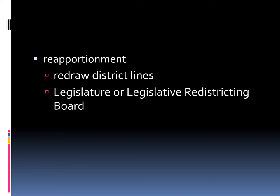Let's talk about reapportionment. That means we take the population counts from the census and figure out how they're going to be calculated. The reapportionment part means you may have to redraw the district lines every 10 years when the census comes out — it has to be reapportioned. Either the legislature can do it or the legislative districting board can do it, which is a special board that can meet if the legislature doesn't want to. But by far, it's always the legislature that wants to do it.